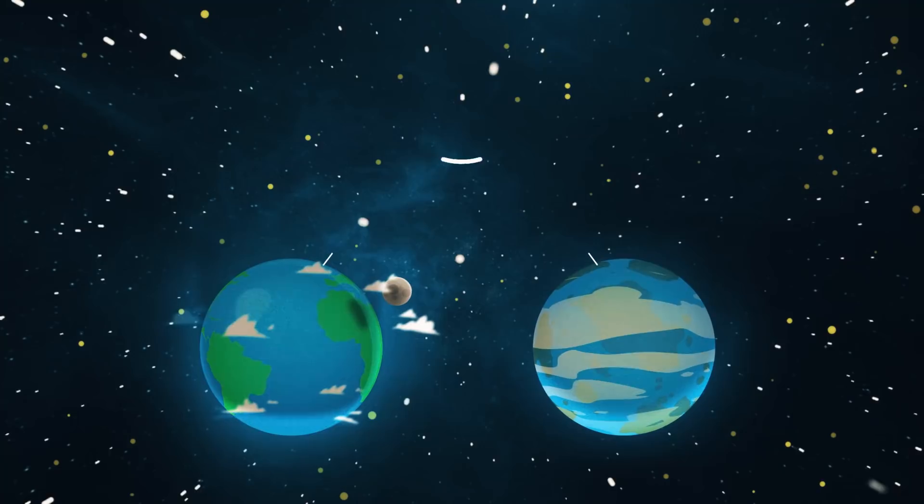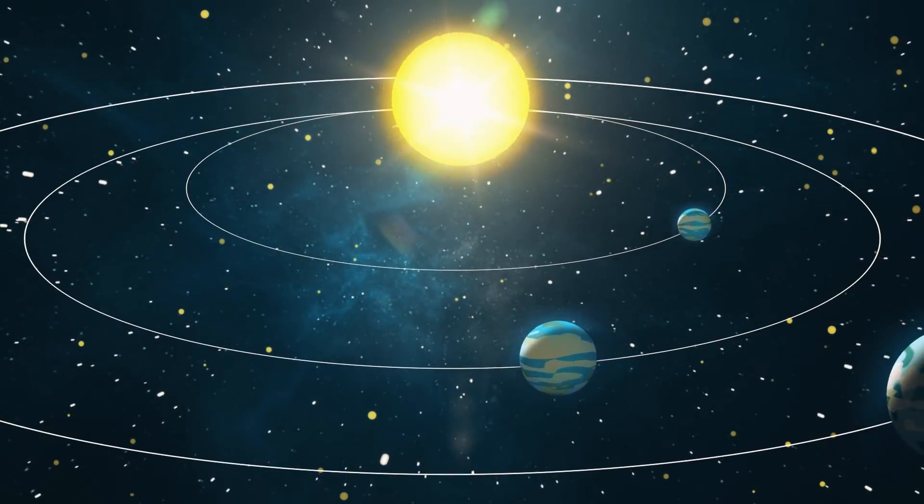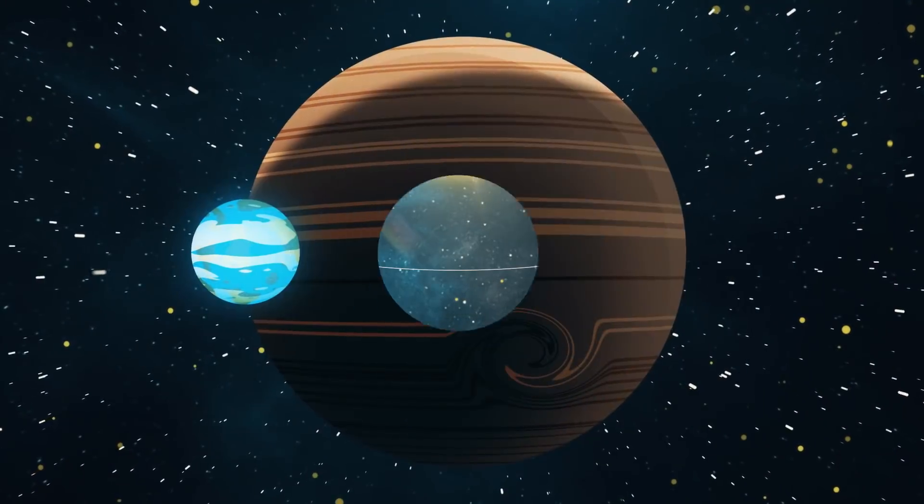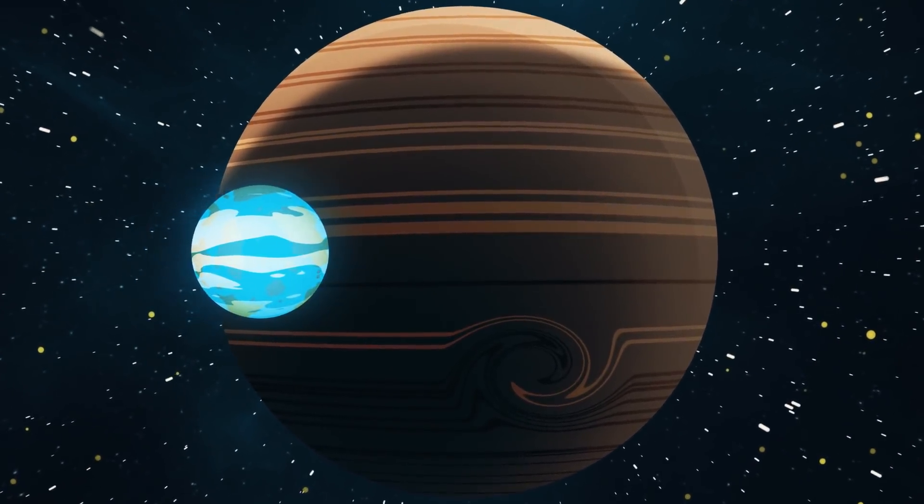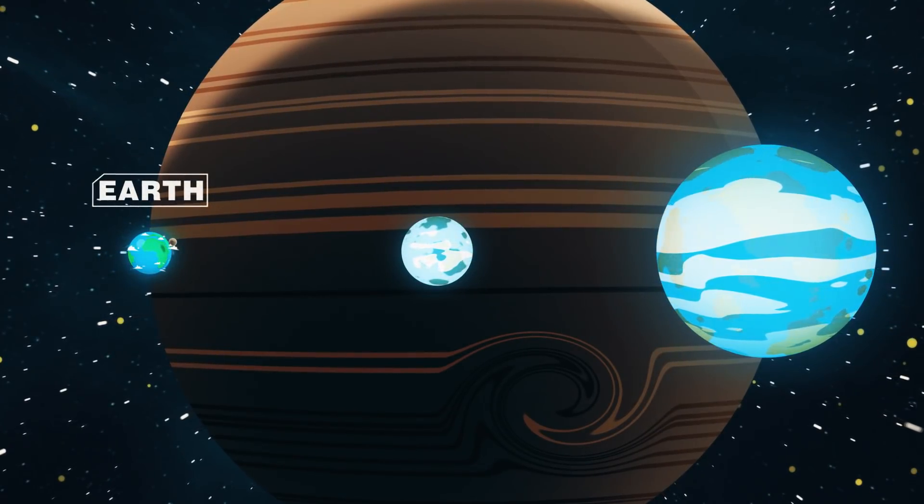These planets, like Earth, have solid surfaces, orbit around nearby stars, and maintain some sort of atmosphere. Though they are smaller than most gas giants, super-Earths can range from two to ten times the size of our planet.